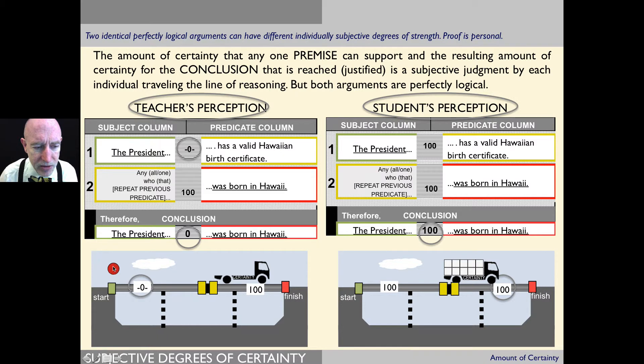But as that truck starts off here full with all 10 boxes of certainty, giving you 100%, all those boxes have to be dumped. So by the time it gets to the second premise, there's no certainty left. So the teacher perceives this argument, the conclusion, as having zero weight.